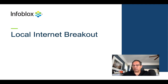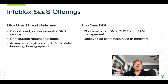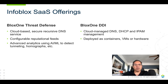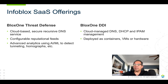Before talking about Local Internet Breakout, I need to give you a little bit of background. Infoblox has two SaaS offerings. The first one is BloxOne Threat Defense, which is a cloud-based recursive DNS service. Customers can send queries to our Anycast addresses and we'll check reputational information and our own analytical algorithms to make sure that neither the name they're looking up nor the data returned is malicious. The other is BloxOne DDI, our cloud-managed DDI service. I've talked about BloxOne DDI a little bit before, mostly in the context of its DHCP redundancy options.